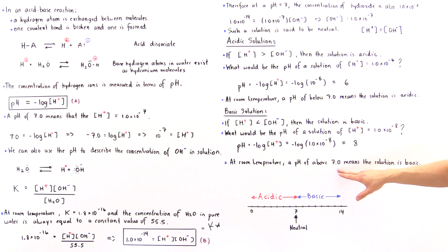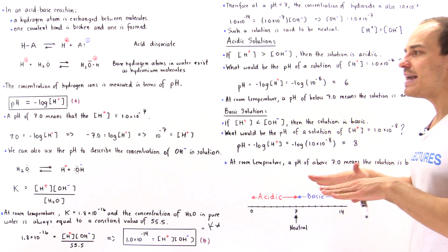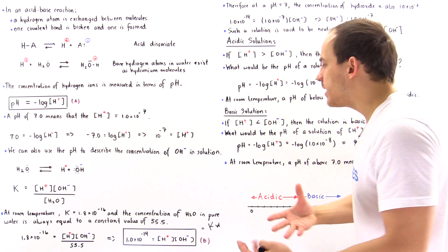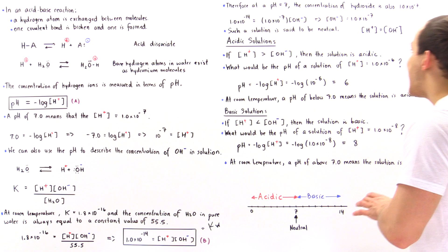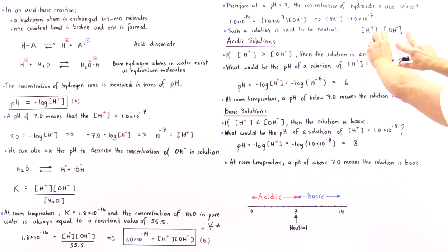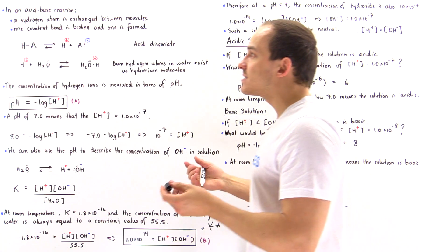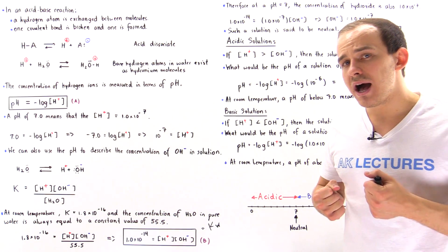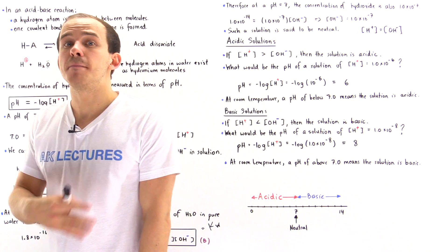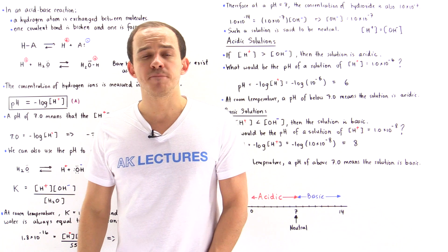To summarize: at room temperature, a pH below 7 means the solution is acidic; a pH above 7 means it is basic; and a pH equal to 7 means it is neutral, where the hydroxide concentration equals the hydrogen ion concentration. These are the basics you'll need for the next lecture, where we'll discuss how the pH of a solution inside our body can influence what the biochemical reaction pathway is and what the final structure is of the biological molecule produced.